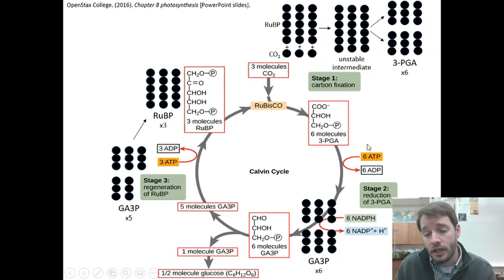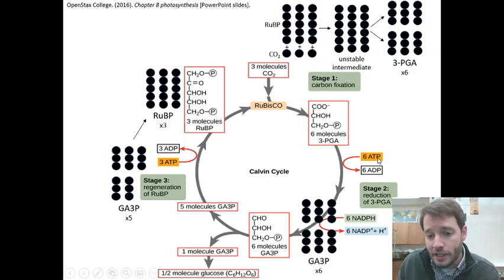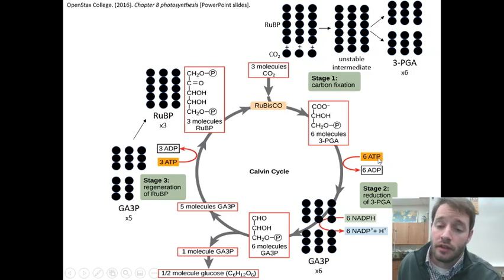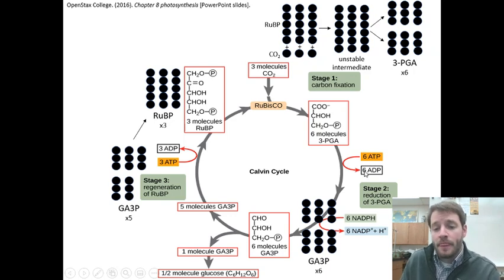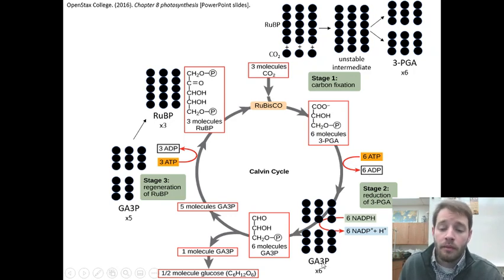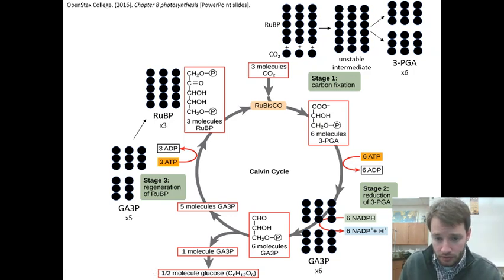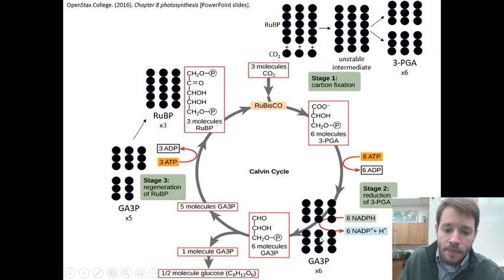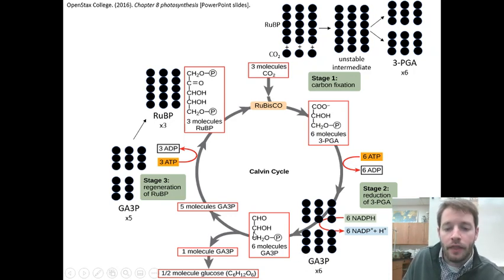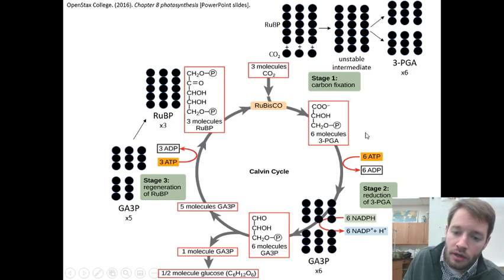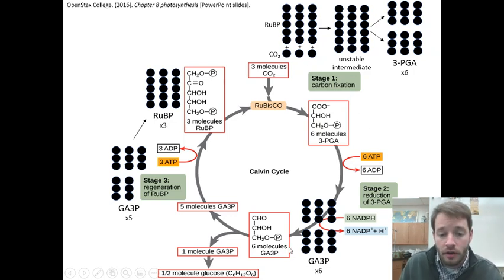The next stage is called reduction. We take these six three-PGA molecules and use energy from ATP that was generated in the light-dependent reactions — the ATP is depleted to ADP. In the process, these PGA molecules are being reduced to a higher energy molecule called GA3P, of which we also have six. At this point, one of those GA3P molecules will be stored, and then the remaining five get reconverted to the original five-carbon chains, and then the cycle goes through once more to create another GA3P.